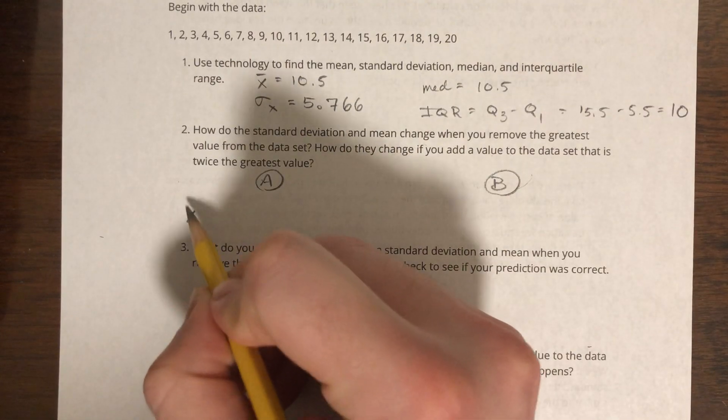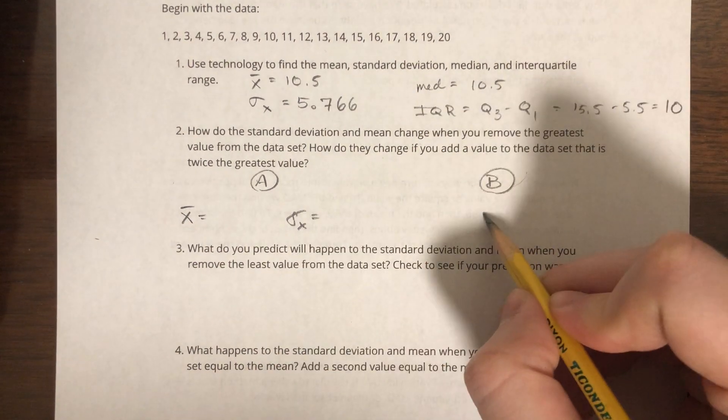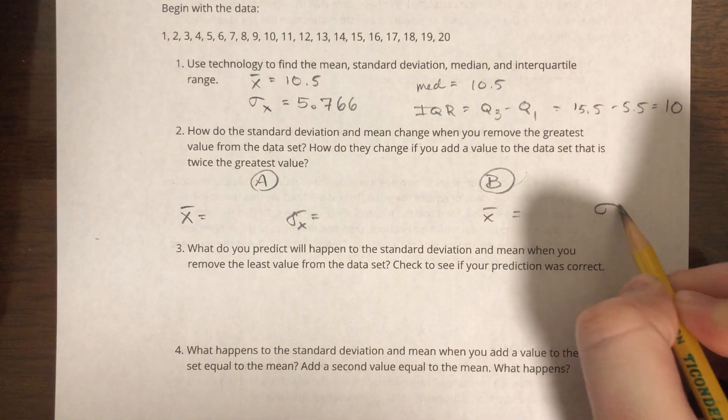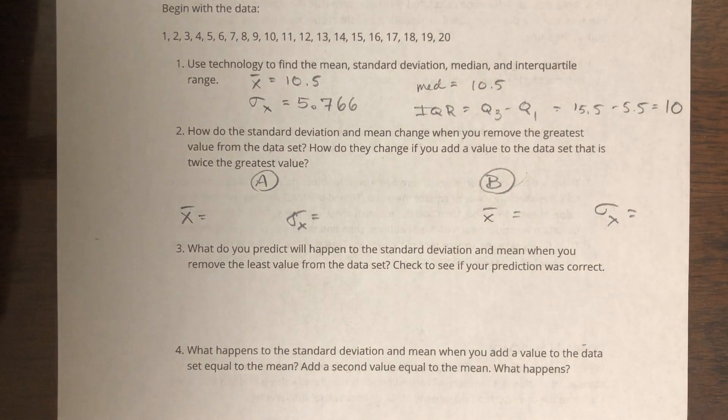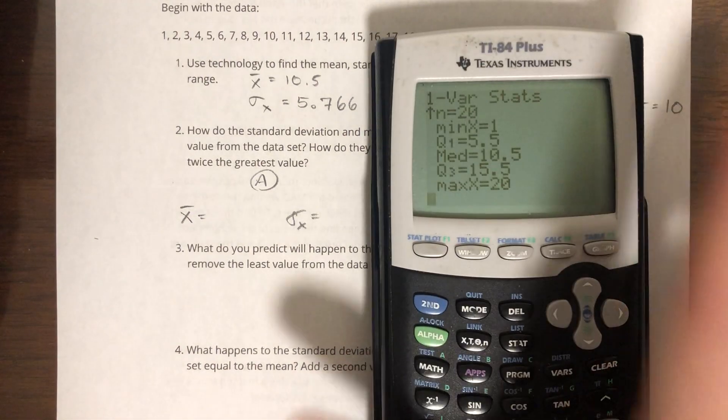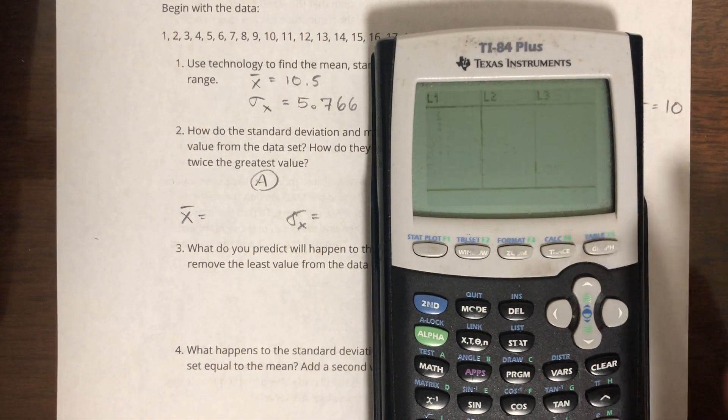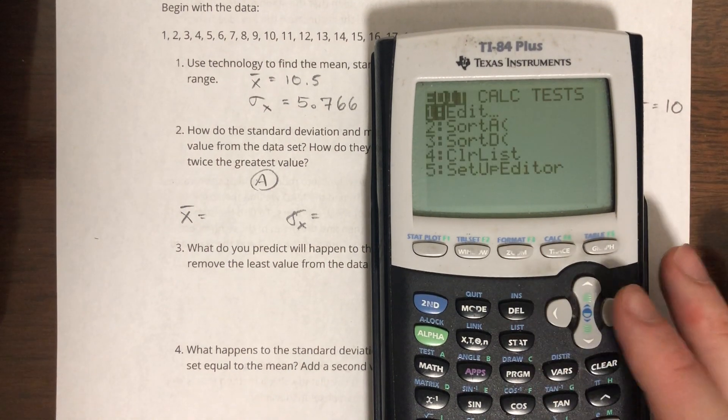So let's call this A and B, right? These are asking us two different things. So I'm going to write mean, standard deviation, mean, standard deviation. So try that now. What is the mean when you remove the greatest value from the data set? What is the standard deviation?